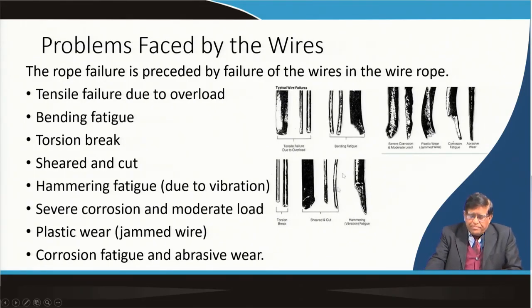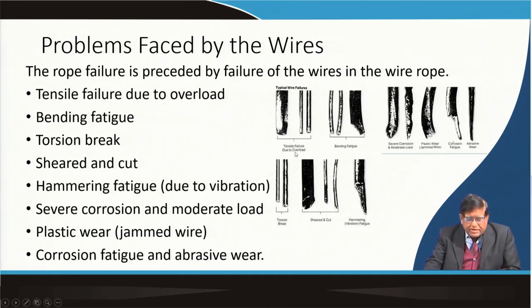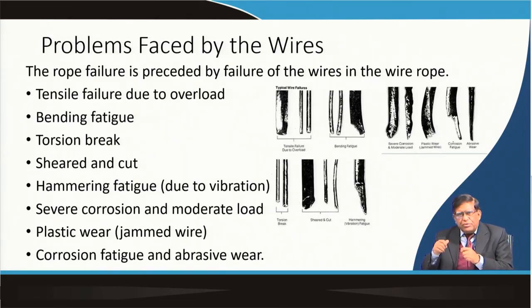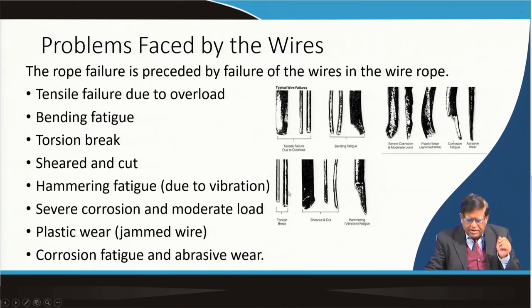In figures of damaged wires you can see: in tensile failure, due to overload, the wire gets a thinning portion, elongates, and then fails. In bending fatigue a different type of damage is visible. In torsional break, you can see how a small wire given twisting eventually fails. Similar things happen in wire ropes.